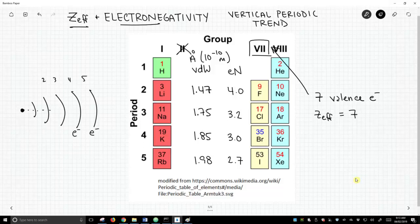...the distance between the nucleus, which is where our protons are, and the valence electrons gets greater and greater. So even though the effective nuclear charge is constant, the distance that that attraction is exerted across gets larger.